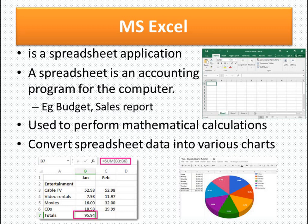You can find the class average, subject average, topper, and rank list all very easily. Another use is to convert the data you have entered into various charts — bar chart, pie chart, donut chart, and more. Spreadsheets work on both numbers as well as text. They can help organize information like arranging names in alphabetical order or numbers in descending order, and calculate and analyze information using formulas.